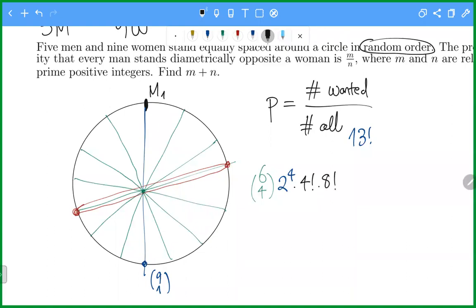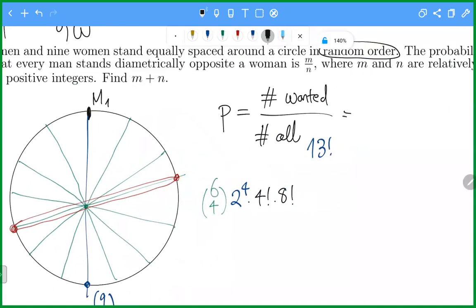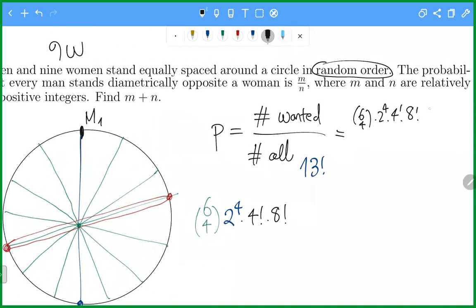So the number of wanted cases is indeed six choose four times two to the four times four factorial times eight factorial and nine choose one, all over all cases is 13 factorial. So let's calculate this number.